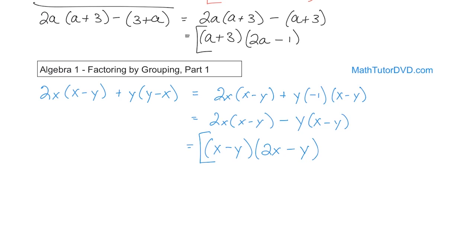Basically, factoring by grouping: you want to look for common terms. If you need to flip the order of addition to make a match, do that. If they already match, go ahead and factor them out. If they're very close but subtracted with the order just different, you can force them to match by factoring out a minus one first. Make sure you understand this — do this yourself, and follow along to the next section for more practice. You can learn anything at mathandscience.com.